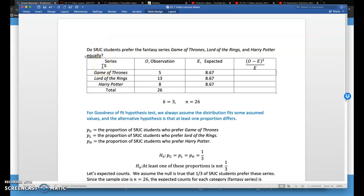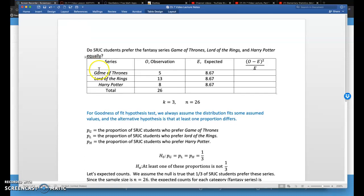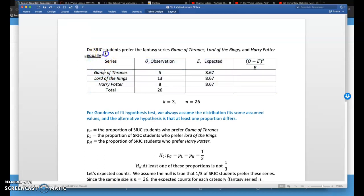Alright, welcome back to our Chapter 7 video lecture series. We are looking at the Chi-Squared Goodness of Fit Test. In the last video, we went over the question: Do SRJC students prefer the fantasy series Game of Thrones, Lord of the Rings, and Harry Potter equally?